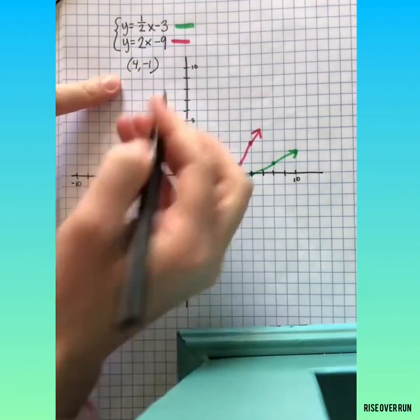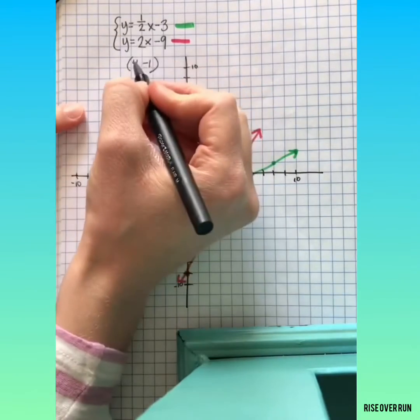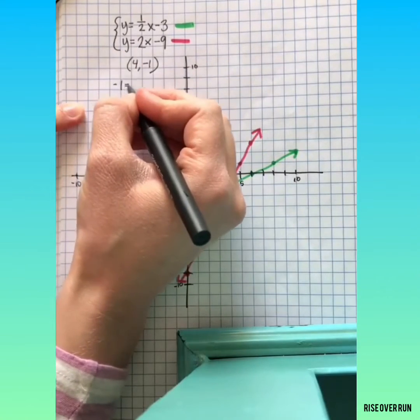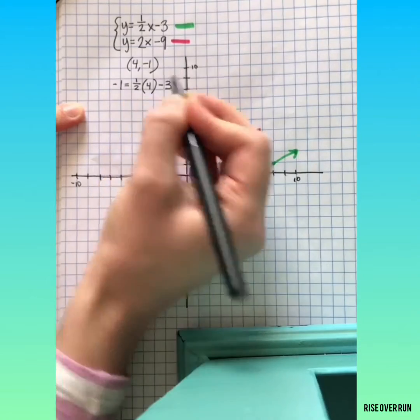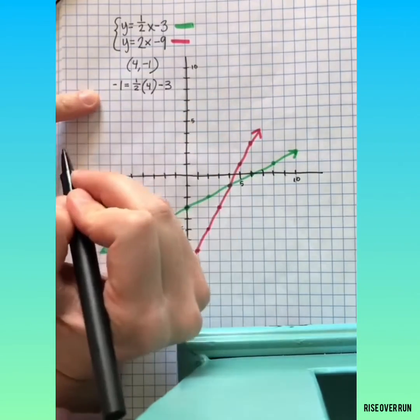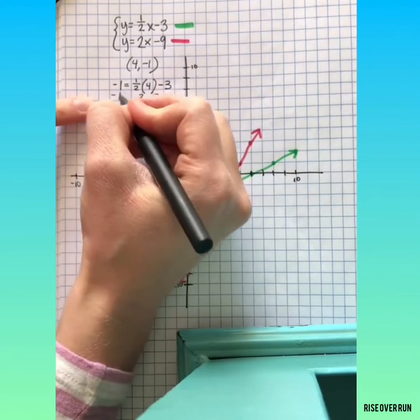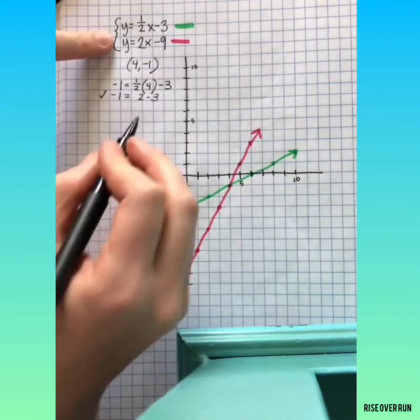If I want to test out the solution, I can plug this in each equation and it should work. If I plug in a 4 for x and a negative 1 for y, this should be true. 1 half of 4 is 2, 2 minus 3 is negative 1.